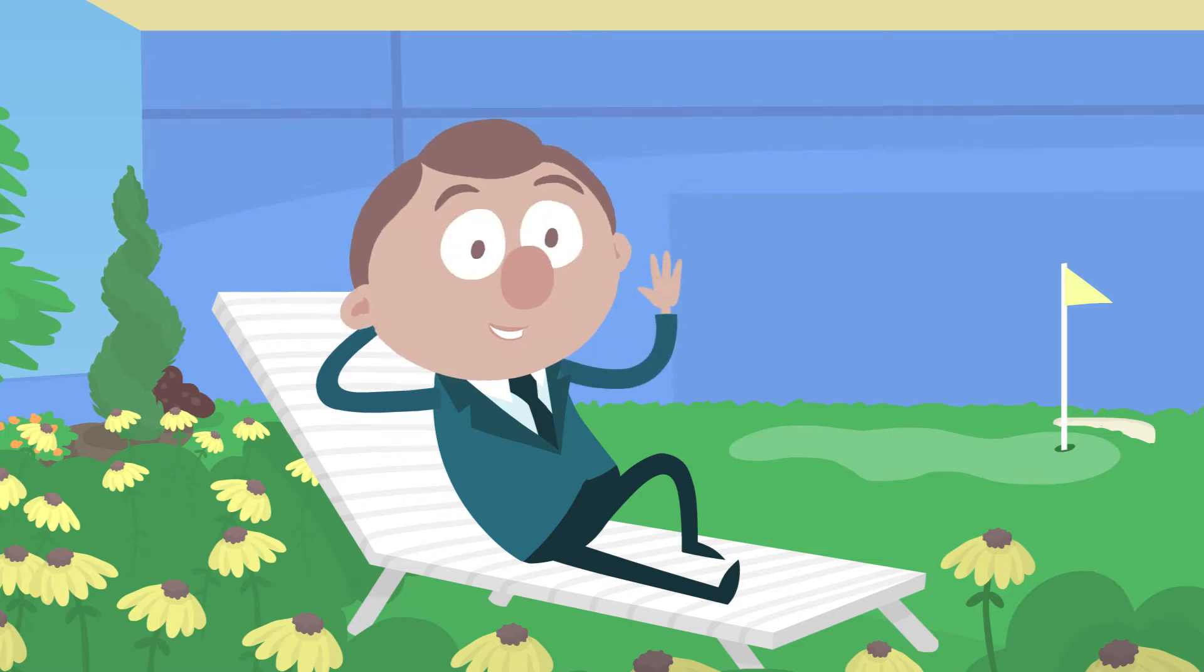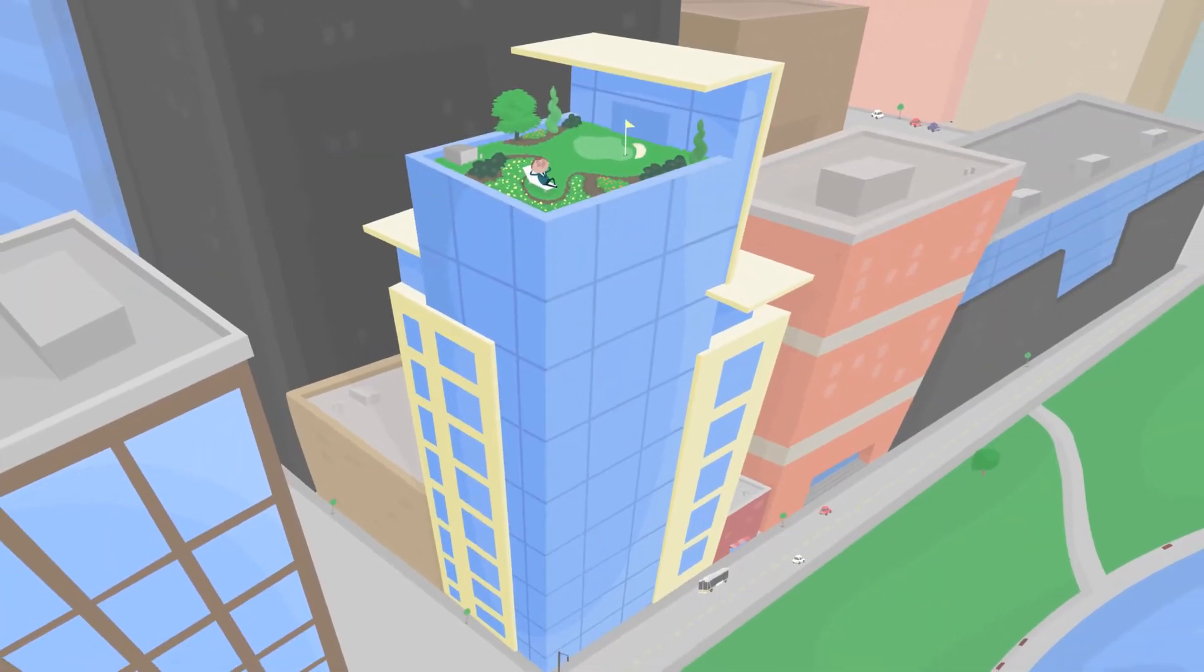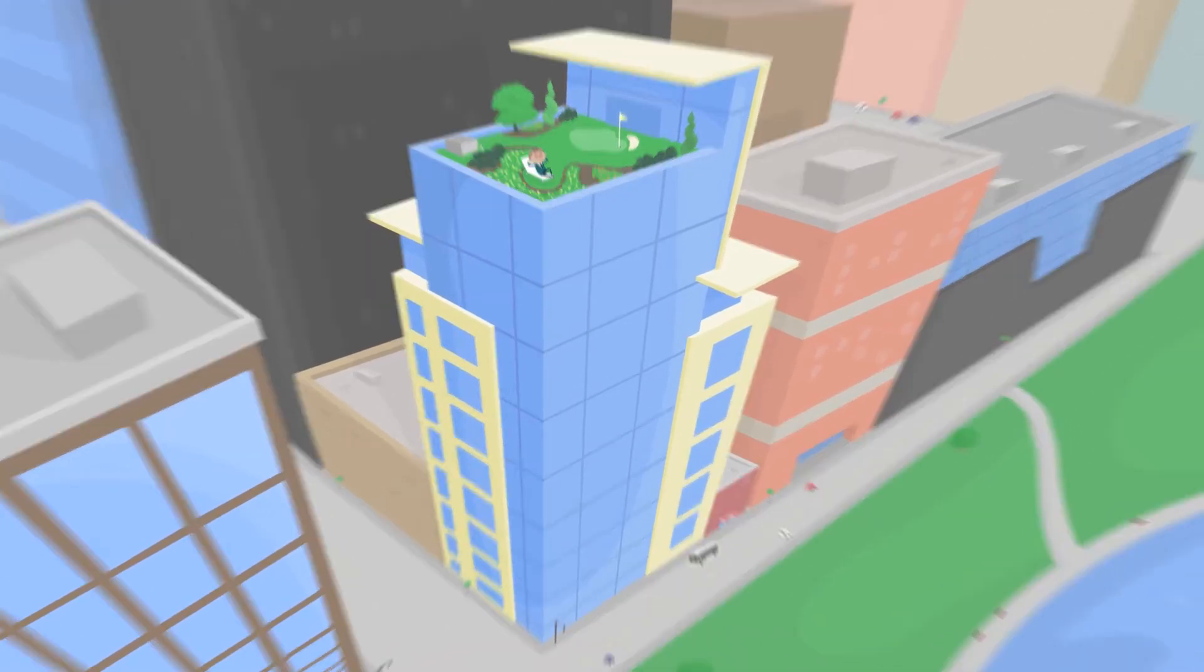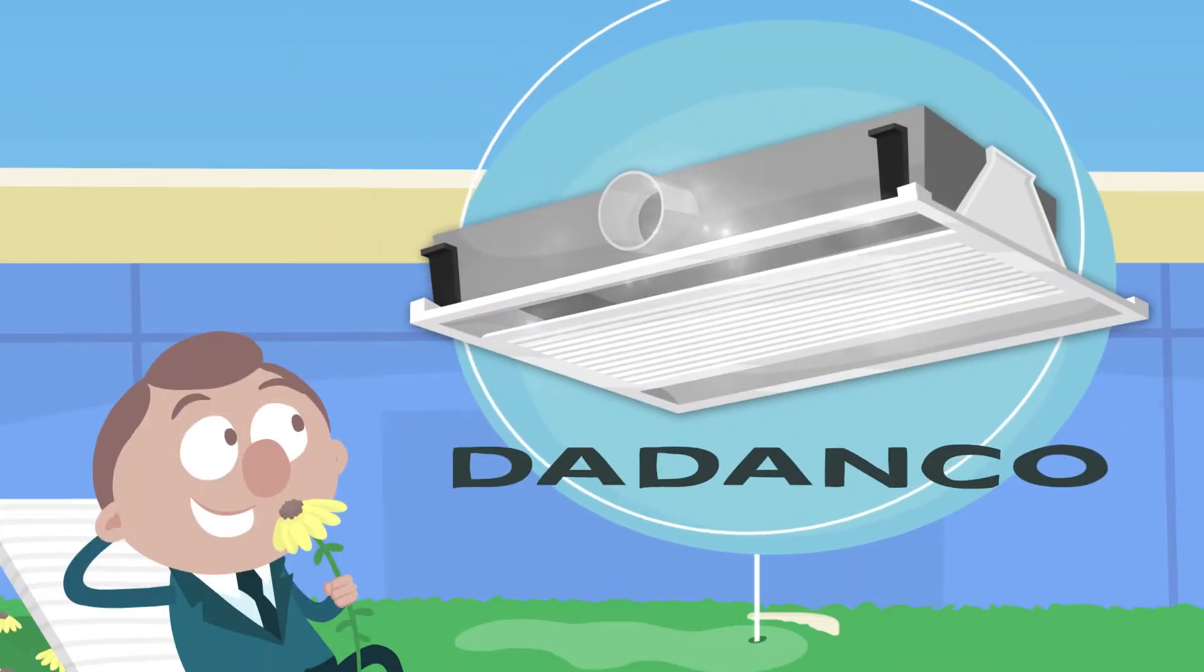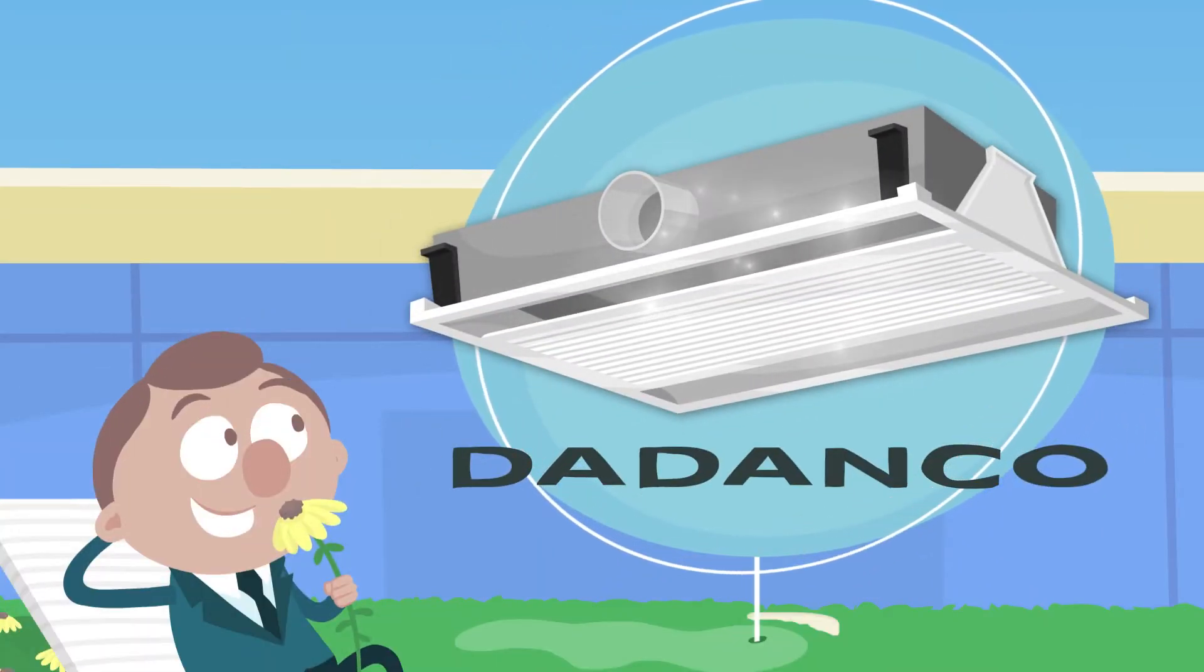Say hello to Albert. His gorgeous new office tower isn't just easy on the eyes, it's easy on the planet. That's because it's built with the greenest technologies, including a super-efficient active chilled beam solution from Dudenco.